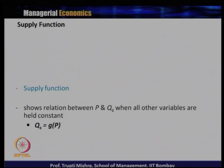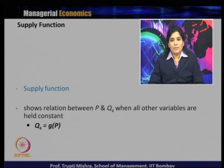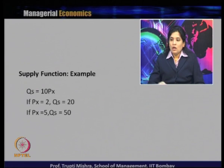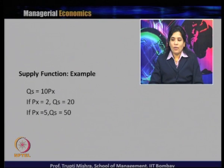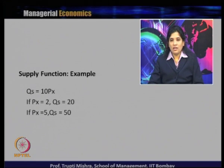Now we look at the supply function. Keeping all other variables that influence quantity supplied fixed, the relationship between price and quantity supplied comes directly from the law of supply - all other things remaining constant. The law of supply says there is a positive relationship between price and quantity supplied. If we formulate a supply function: Qs = 10Px, if the value of Px is 2, then Qs is 20. If the value of Px is 5, then Qs is 50. Price and quantity supplied are positively related - there is no negative sign, only a positive relationship.